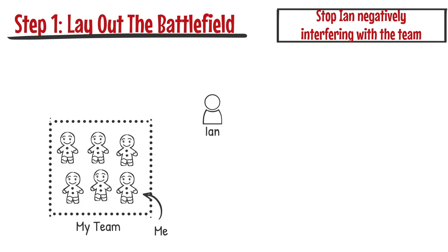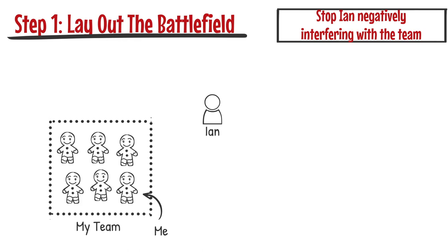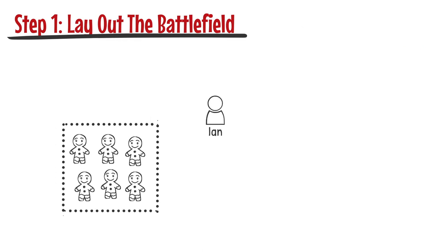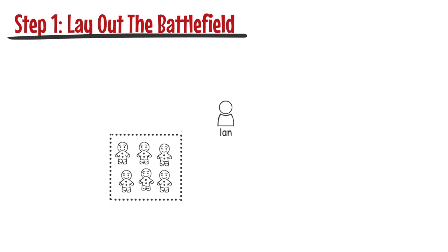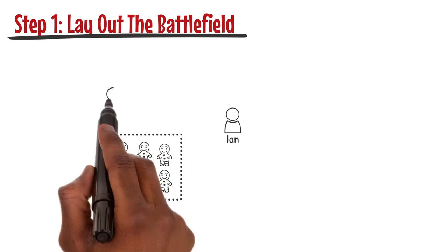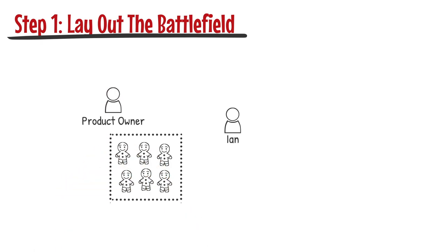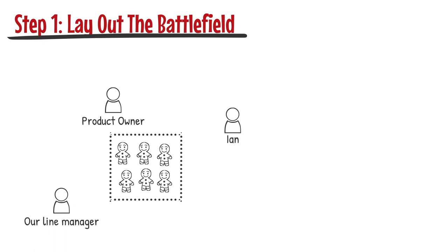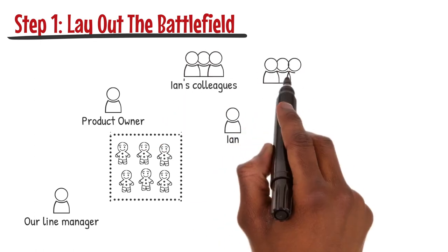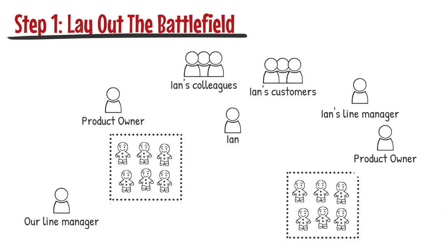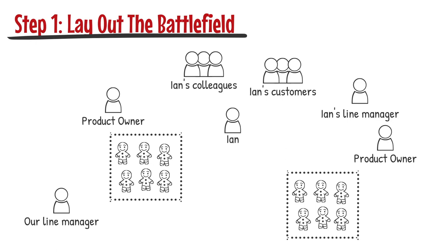Let's say I don't feel comfortable talking to Ian directly, or perhaps I've already tried that and it hasn't worked. When I lay out the battlefield, I look for who else is on the field of play. Perhaps we have a product owner responsible for the overall return on investment, a line manager interested in our output and happiness, Ian's colleagues, customers and managers, and another team that Ian interacts with. We try to find as many people who are involved or could become involved, and draw them on our battle map.